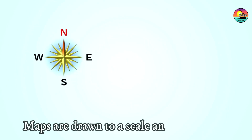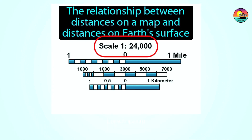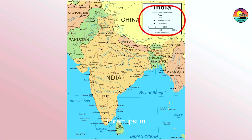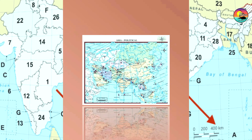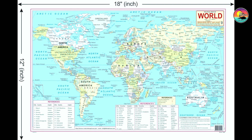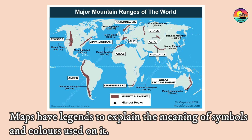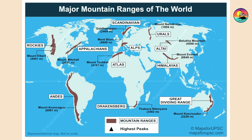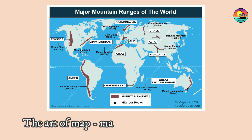Maps are drawn to a scale and direction. The symbols and colors used on it — the art of map making is called cartography.